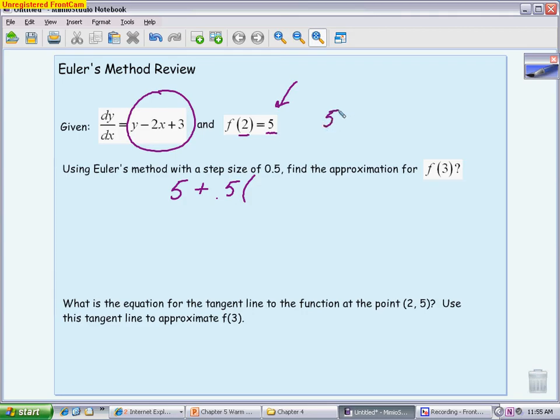And you can do a little scratch work off to the side or in your head. Minus 2 times 2 is 4 plus 3. We get 1 plus 3, which is 4. And this is going to give you my new y value. So I have 5 plus 0.5 times 4 is 5 plus 2, which is 7. Which means I have the point 2.5, 7.